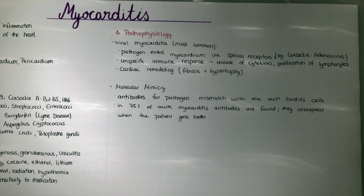This kind of damage can be seen in 50 to 70 percent of all myocarditis patients. Another mechanism is molecular mimicry, where antibodies to certain pathogens mismatch with the body's own cardiac cells. This occurs, for example, in rheumatic fever caused by group A beta-hemolytic streptococcus, where the immune system attacks cardiac cells because the antibodies to the pathogen resemble the cardiac cells.